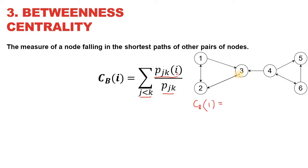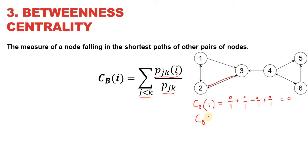The shortest path between nodes 2 and 3 does not contain node 1, so it contributes 0 divided by 1. The shortest paths from 2 to 4, 2 to 5, and 2 to 6 also do not contain node 1. Similarly, the shortest paths from 3, 4, 5, and 6 to all other nodes do not contain node 1. So the betweenness centrality of node 1 is 0. Considering the graph to be undirected, the betweenness centrality for node 2 is also 0, because it does not fall into the shortest path of any two other nodes.